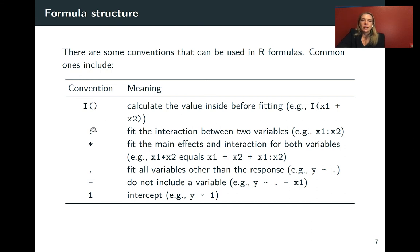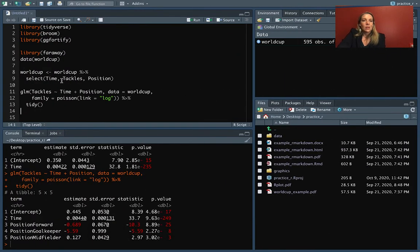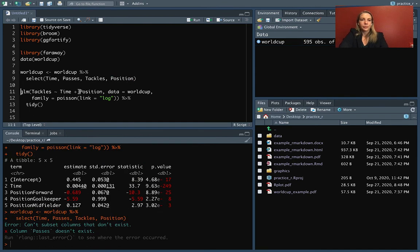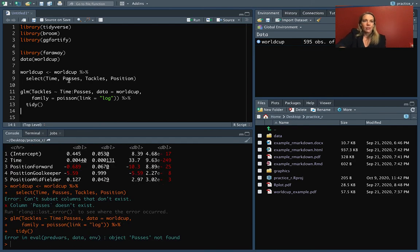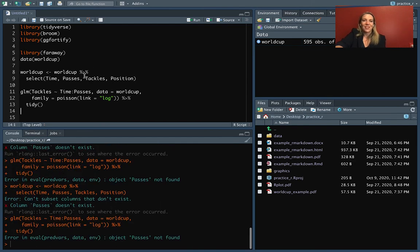We can also get either an interaction or the main effects and the interaction between two variables. So we could go back and look at maybe time and passes. So we've got two continuous variables. If we do time and passes, we can do the colon between them instead of the plus sign.